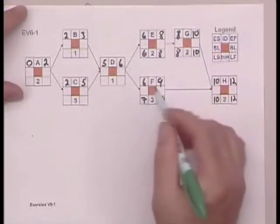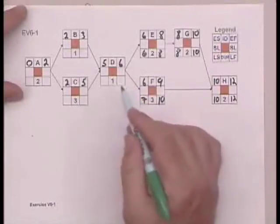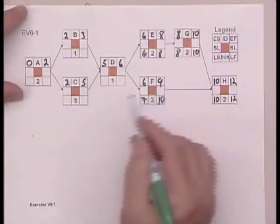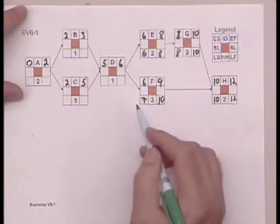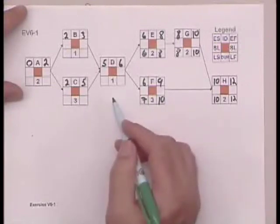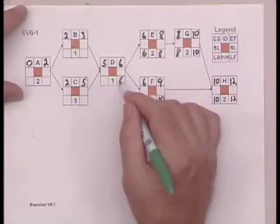3 from 10 is 7. Now, here we have a choice with activity D, and when you go backwards, you choose the smaller number. Remember, going forward, we chose the larger number. Going backwards, we always, when we're faced with a choice, choose the smaller number, which in this case is 6.